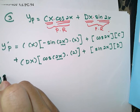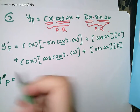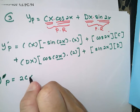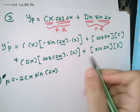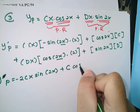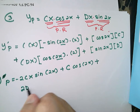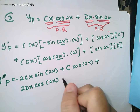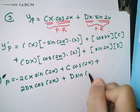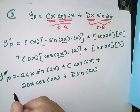Using the product rule, yp' = u·v' + v·u'. For the first term Cx cos(2x): differentiating cos(2x) gives −sin(2x)·2, so u·v' = Cx·(−2sin(2x)), and v·u' = cos(2x)·C. For the second term Dx sin(2x): differentiating sin(2x) gives cos(2x)·2, so u·v' = Dx·2cos(2x), and v·u' = sin(2x)·D. Expanding gives yp' = −2Cx sin(2x) + C cos(2x) + 2Dx cos(2x) + D sin(2x).